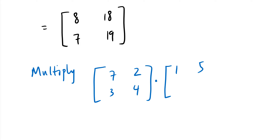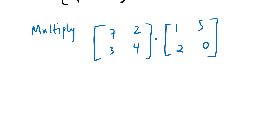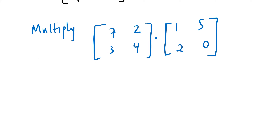Let's look at another example: multiply [7, 2; 3, 4] by [1, 5; 2, 0]. Are we allowed to multiply them? Yes, the dimensions match — both are 2×2. I'd suggest pausing the video and trying to multiply them before looking at the solution. We expect a 2×2 result.